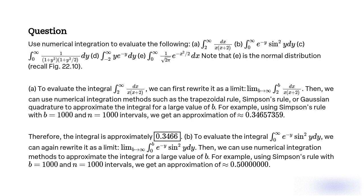To evaluate the integral from 0 to infinity of e^(−2y) dy, we can rewrite it as a limit: lim b→∞ of the integral from 0 to b of e^(−2y) dy. Then we can use numerical integration methods to approximate the integral for a large value of b.